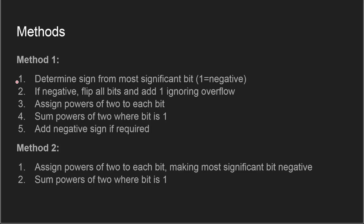Starting off with method one: step one, determine sign from the most significant bit — a bit of one means the number is negative. Step two, if negative, flip all the bits and add one, ignoring overflow. Step three, assign powers of two to each bit. Step four, sum powers of two where the bit is one. And step five, add a negative sign if required. Method two is quicker with only two steps: step one, assign powers of two to each bit making the most significant bit negative, and step two, sum powers of two where the bit is one. Method one and method two are just names I came up with based on the order in which I learned them.